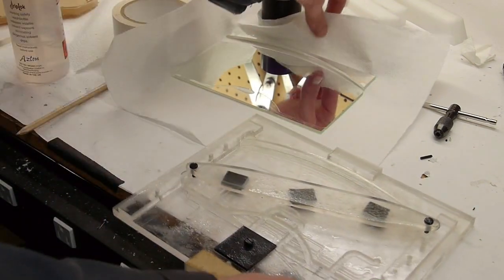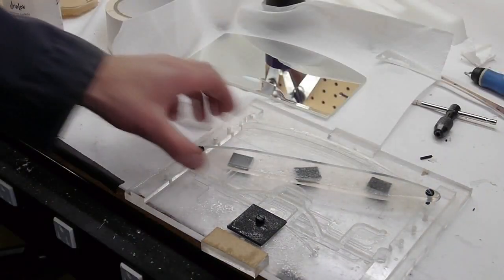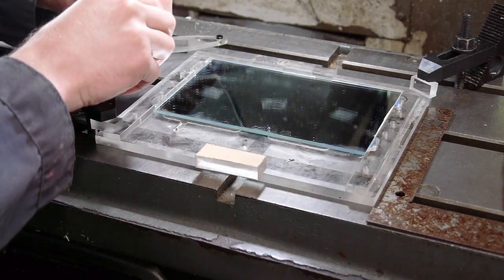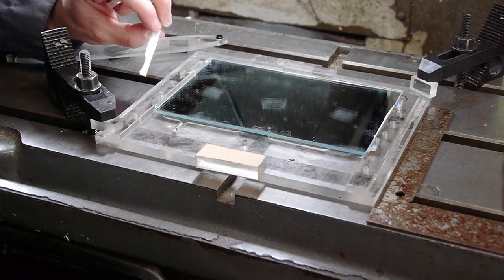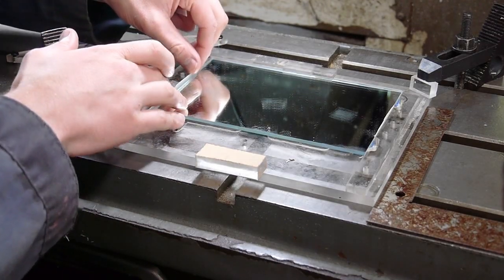So I use this jig right here and the glass gets put inside here and shimmed so that it can be held in horizontal direction and vertical direction without actually pinching it.